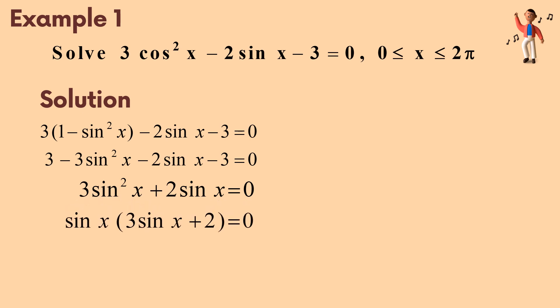Simplifying the equation, we get sin x(3 sin x + 2) = 0. Then, we get sin x = 0 or sin x = -2/3.